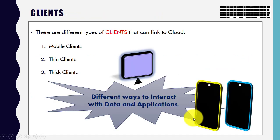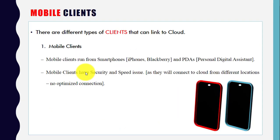First we will see different ways to interact with data and applications. We have different types of clients that can link to the cloud. The first is mobile client, thin client, and thick client. Let's see what a mobile client is — mobile clients run from smartphones like iPhone or BlackBerry, and PDAs (personal digital assistants).